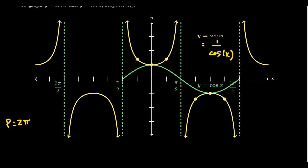When graphing trigonometric functions, there are five special points you want to use — you can always use more to refine the graph. For cosine, the standard points are x = 0, π/2, π, 3π/2, and 2π. I've shifted things slightly and will use negative π/2 as the starting point instead, which gives us two complete buckets of the graph. The green curve on screen is actually cosine, included to show the relationship between secant and cosine given that they're reciprocals.